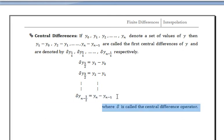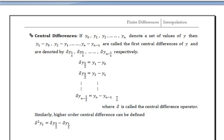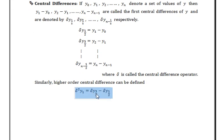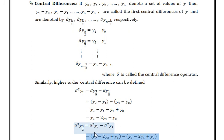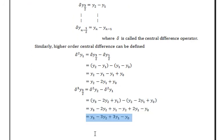For higher order, δ²y1 = δy(3/2) - δy(1/2), and since δy(3/2) = y2 - y1 and δy(1/2) = y1 - y0, simplifying gives δ²y1 = y2 - 2y1 + y0. Similarly, δ³y(3/2) = δ²y2 - δ²y1, and simplifying gives δ³y(3/2) = y3 - 3y2 + 3y1 - y0.